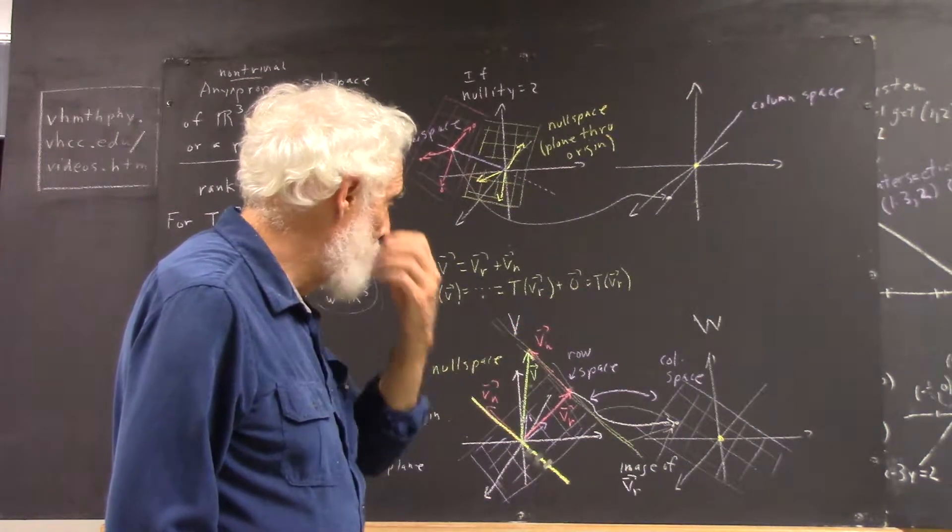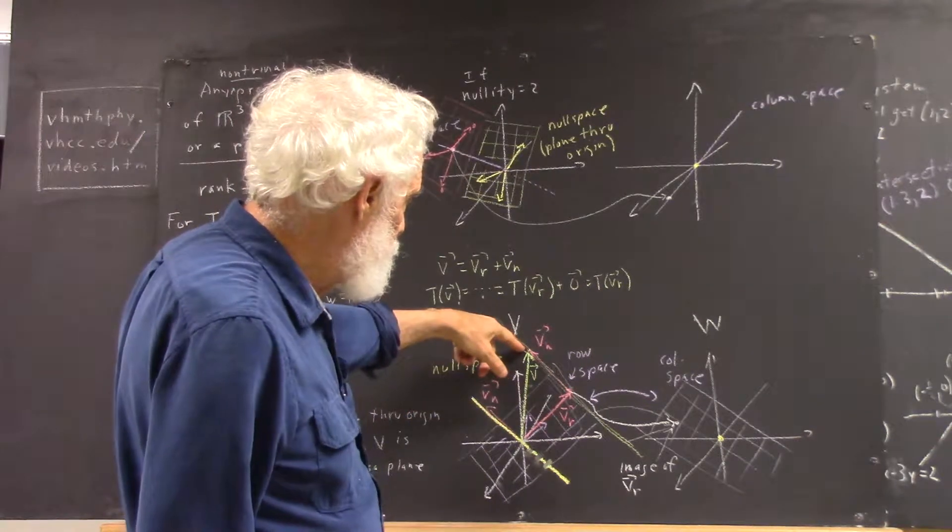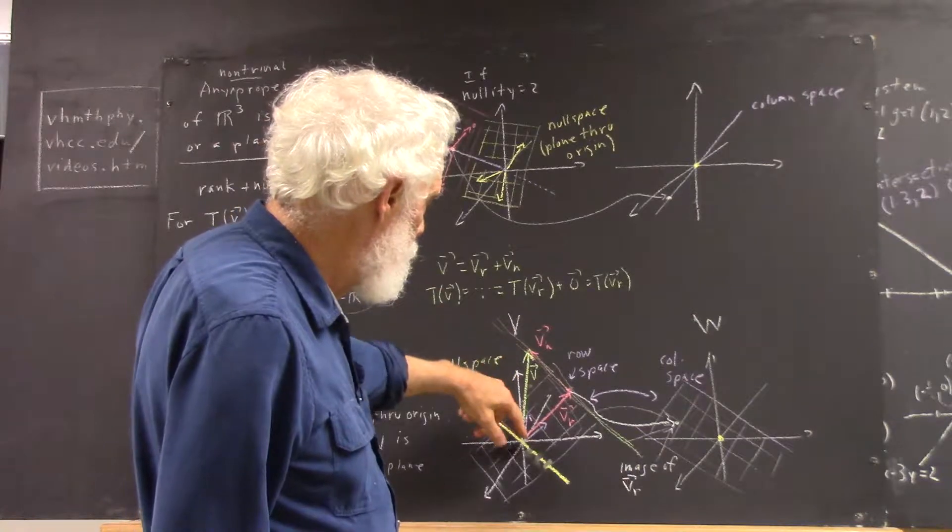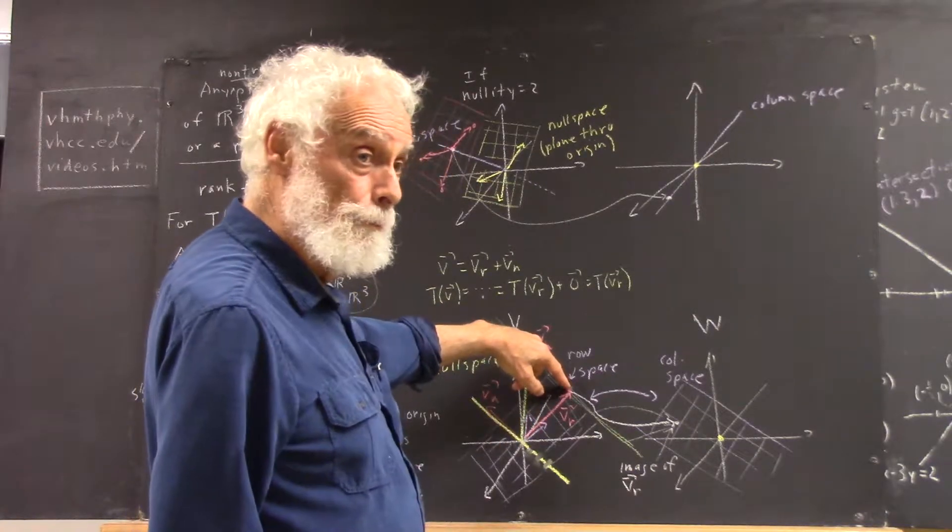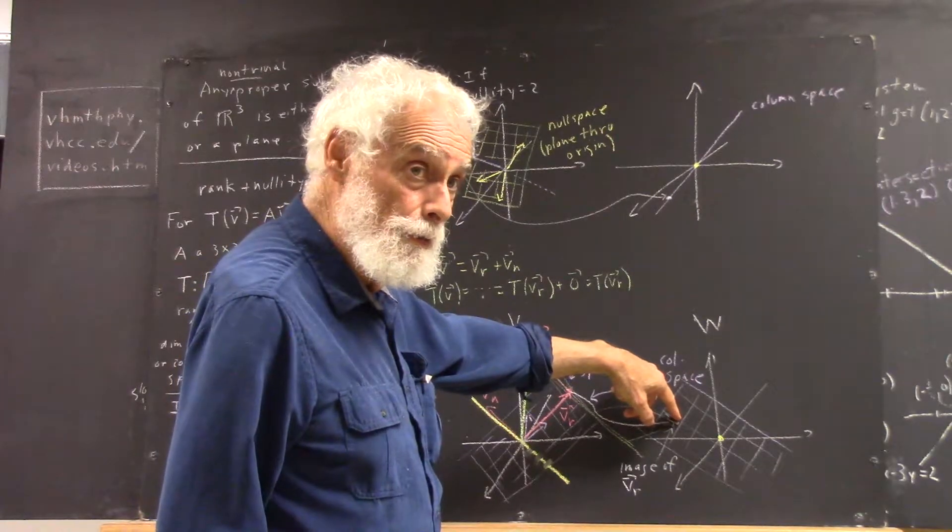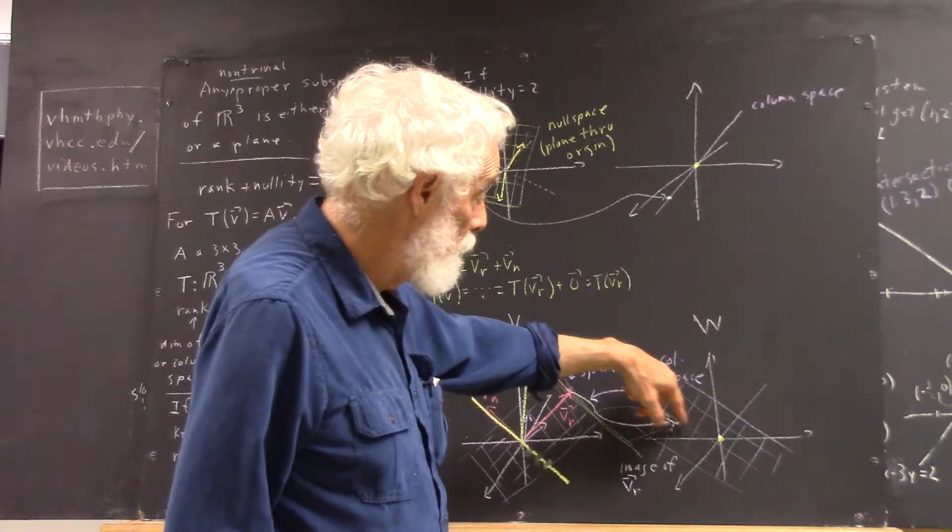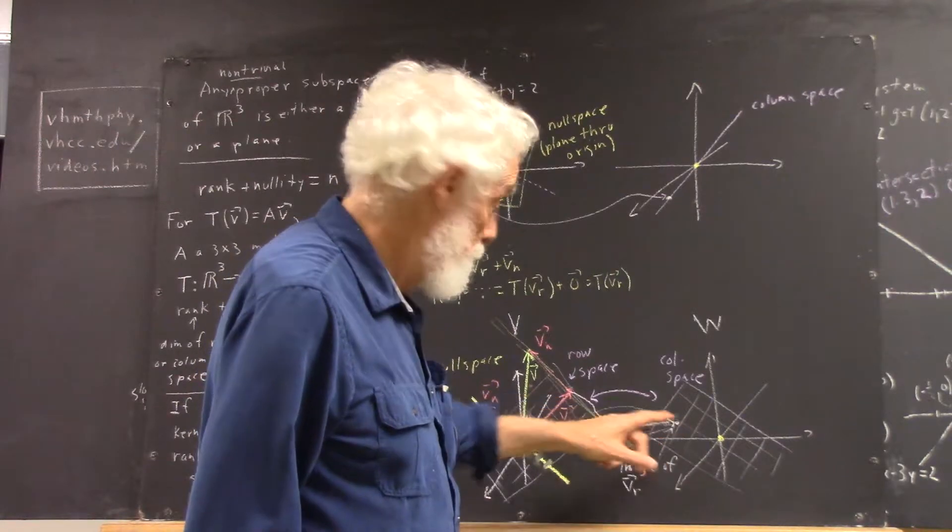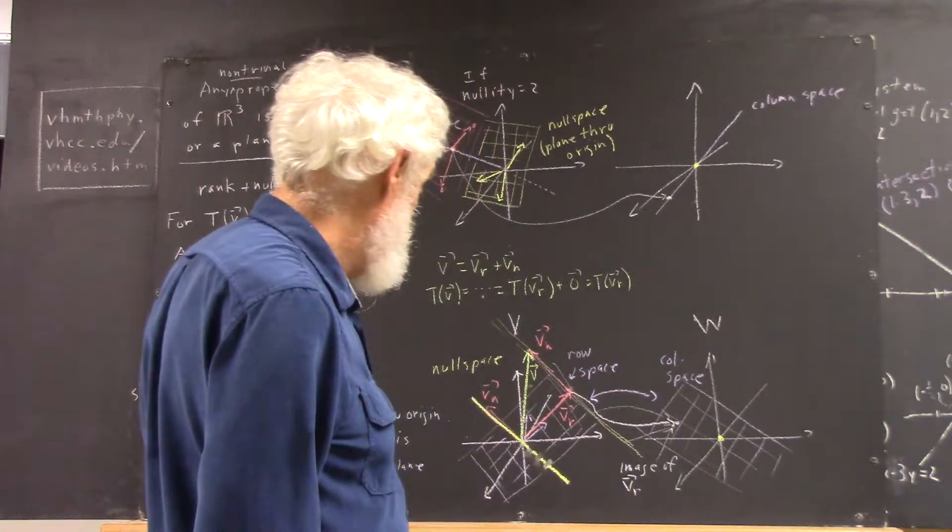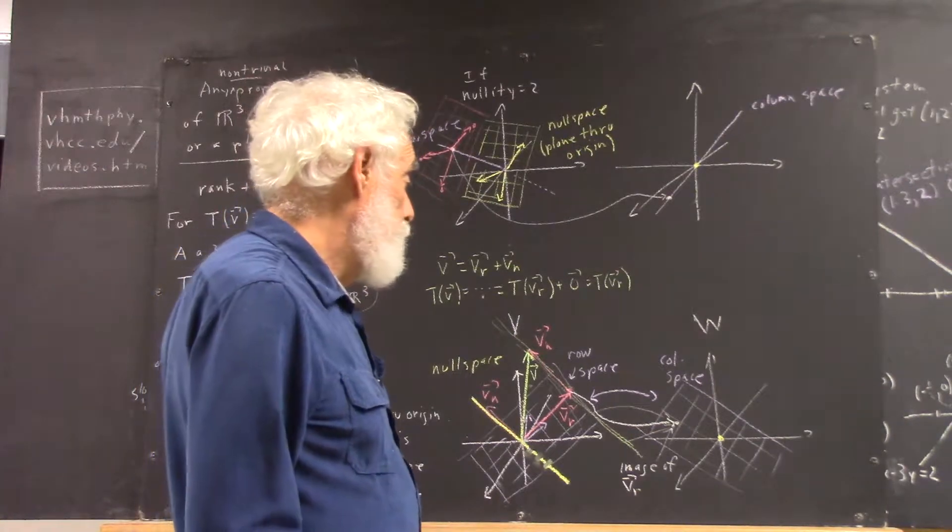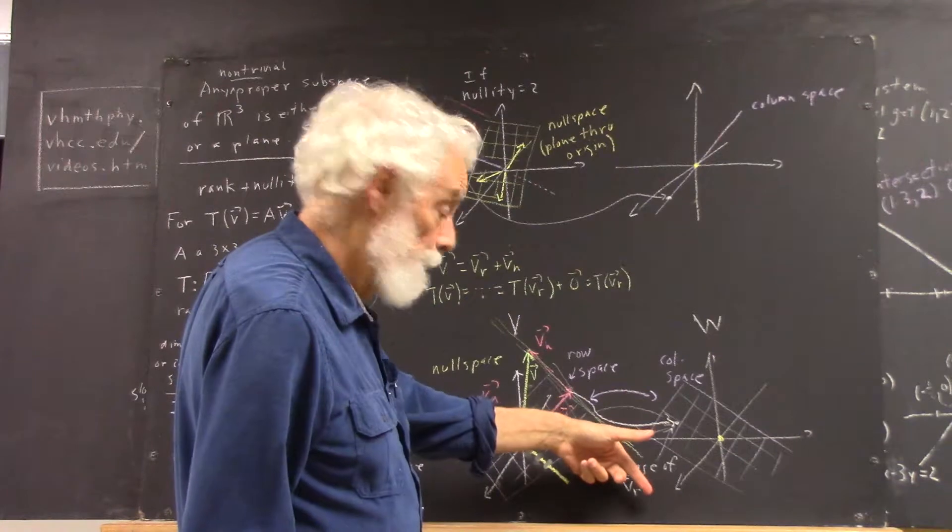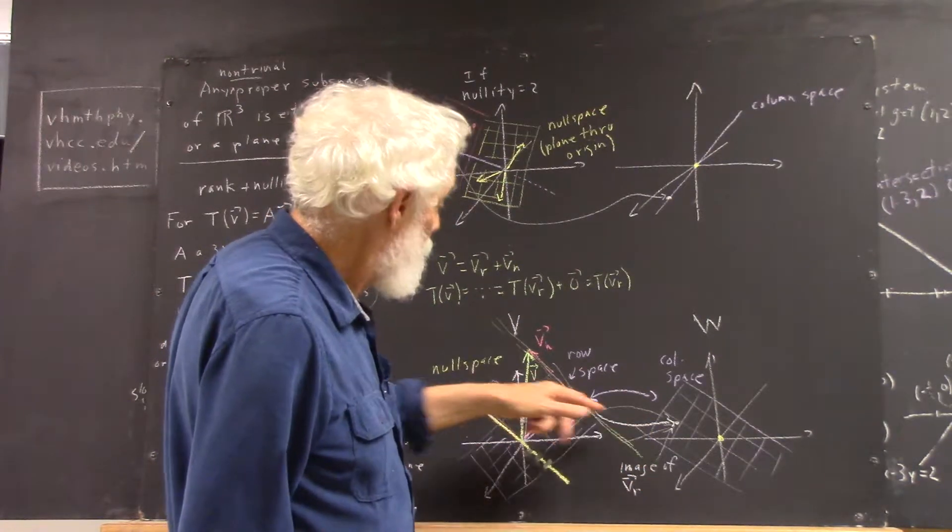So that if this is Vr, and over here is the point in the column space that we map this Vr point to,